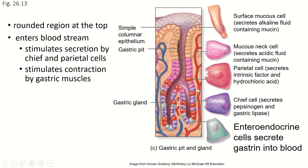Also in the gastric glands are enteroendocrine cells, usually at the deepest part of the glands because they are secreting gastrin into the bloodstream. Gastrin stimulates contraction of the gastric muscles and also tells the brain that food has been received, so gastrin helps you feel full.